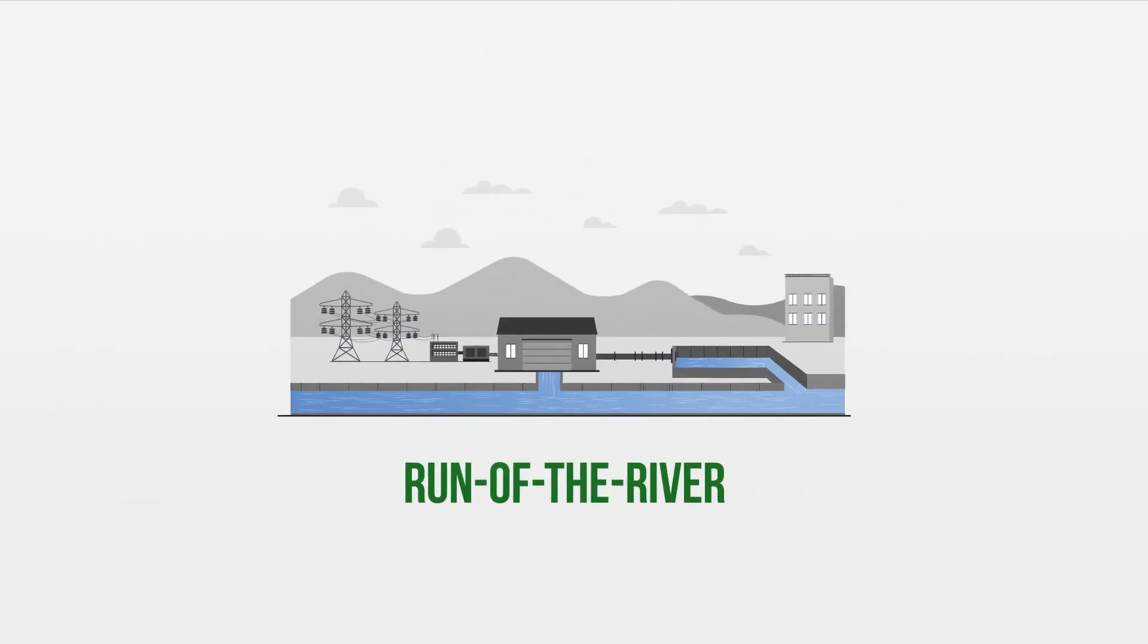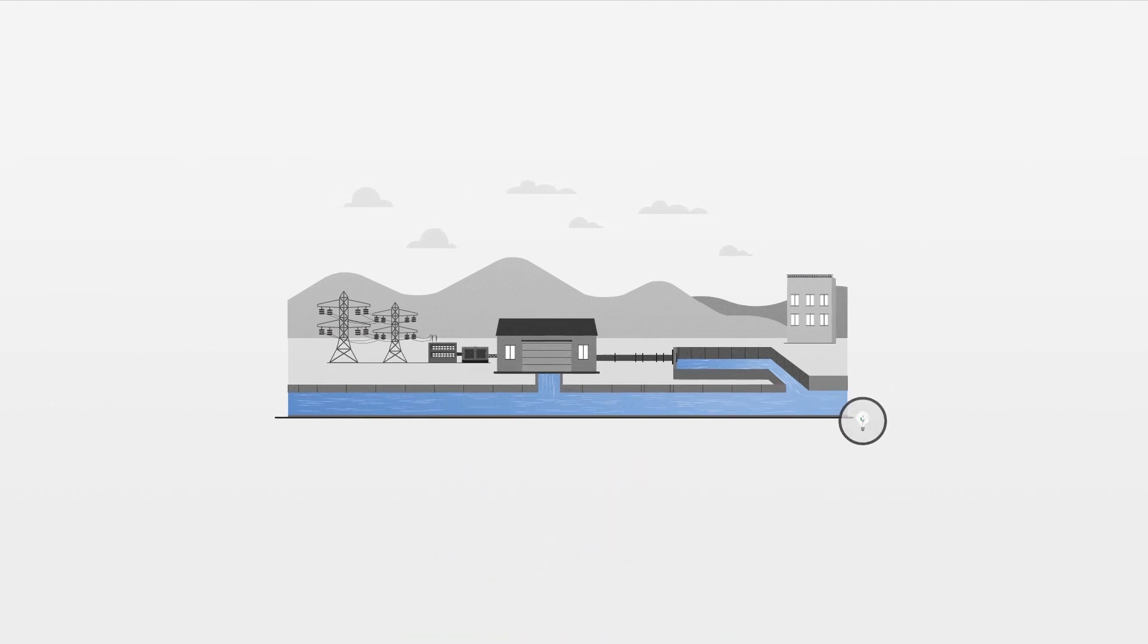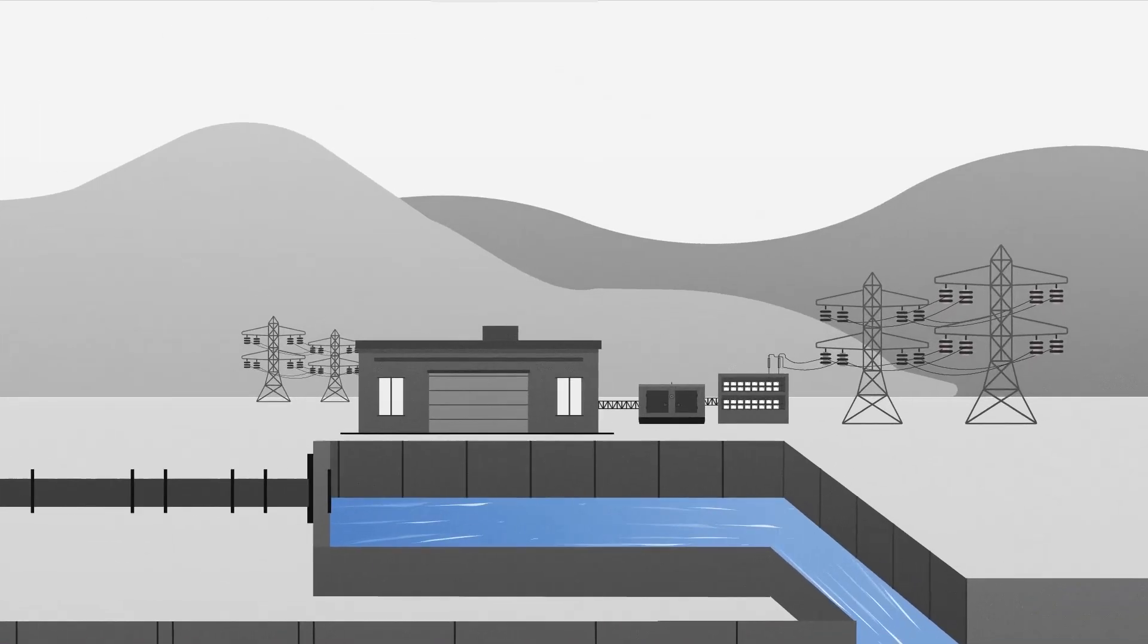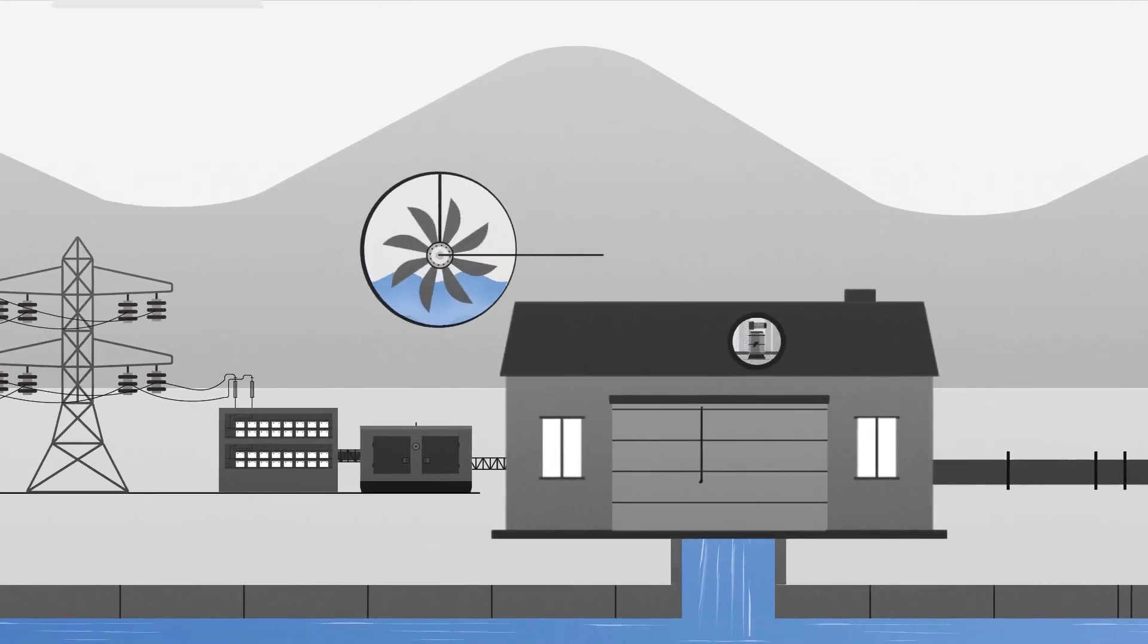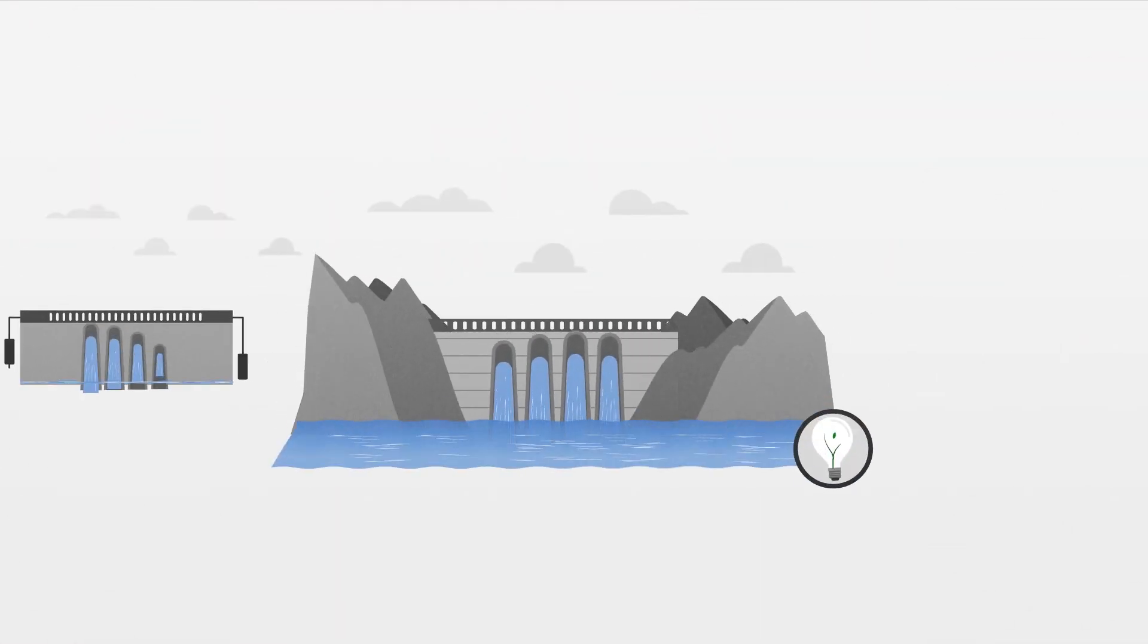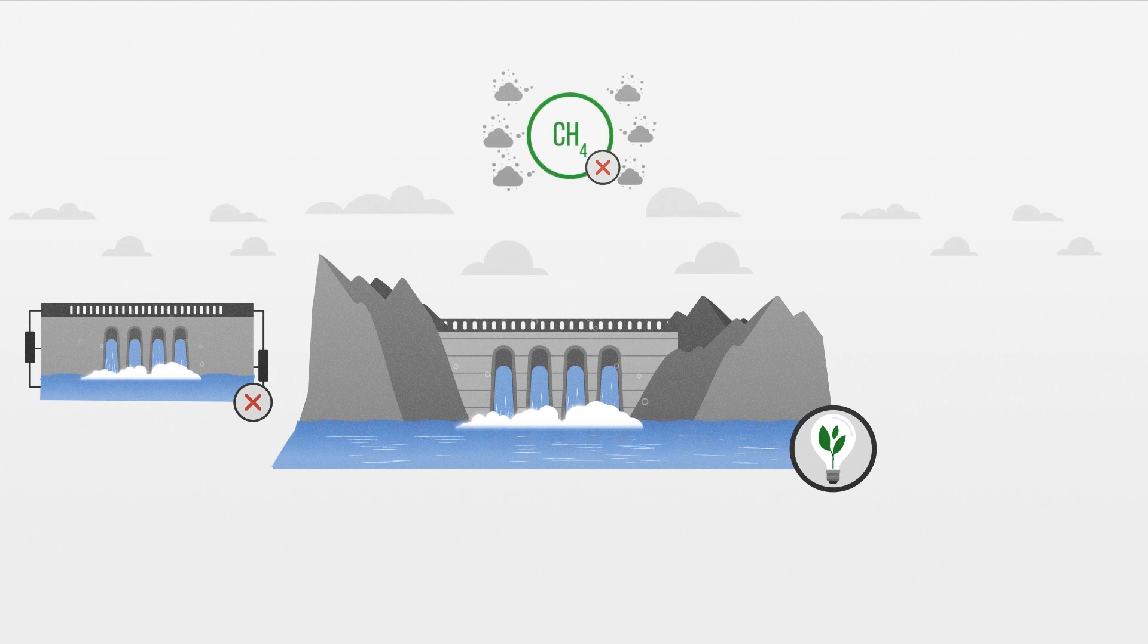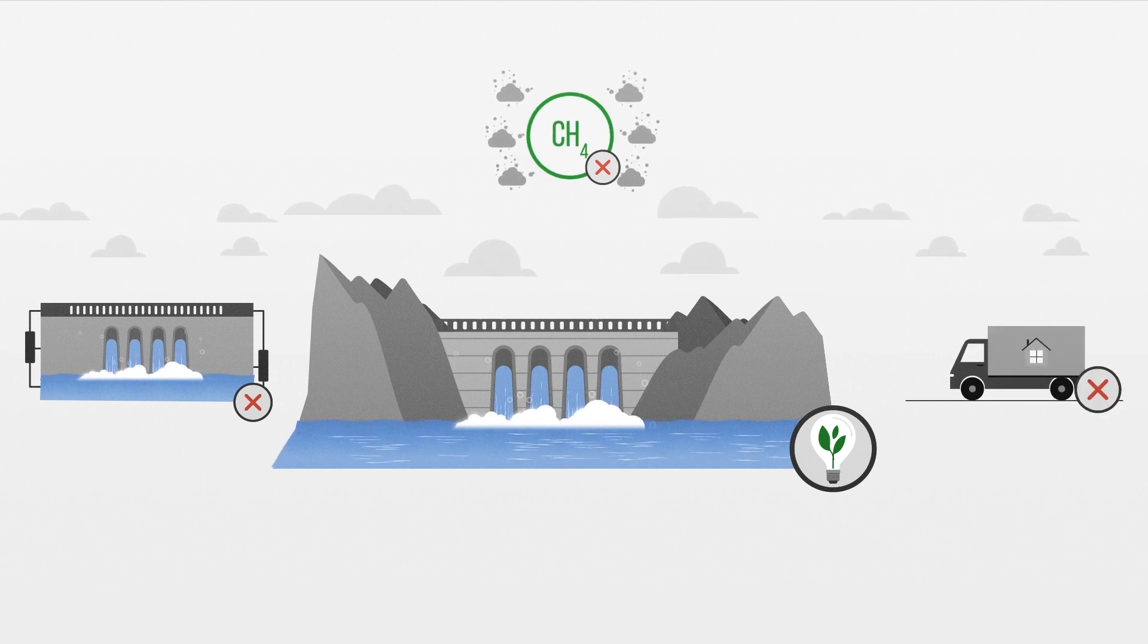A second type of hydroelectricity is known as run-of-the-river and is considered a renewable source of energy. As the name implies, these hydroelectricity plants don't use a dam and instead use the natural flow of the river to spin turbines and generate electricity. This eliminates the need to flood a reservoir, which in turn eliminates the methane releases from the reservoir and the need to relocate citizens.